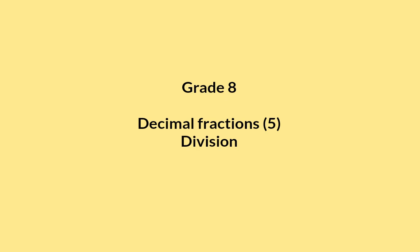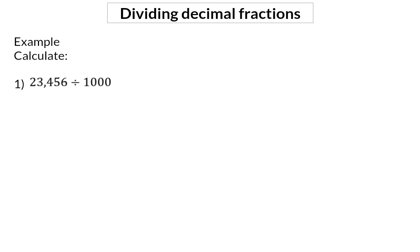In this video, we're going to have a look at division of decimal fractions. Just like with multiplication, we're going to start off having a look at division by powers of 10. When dividing by 10, the comma moves one space to the left. So in our example, when dividing by a thousand, the comma needs to move three spaces to the left, and that will give us a final answer of 0.023456.